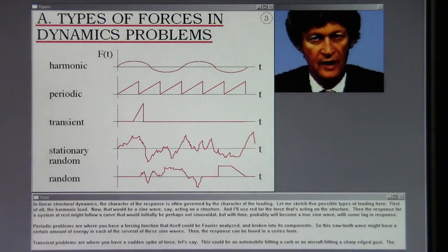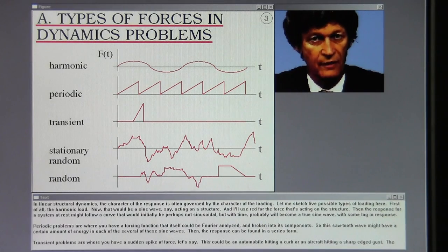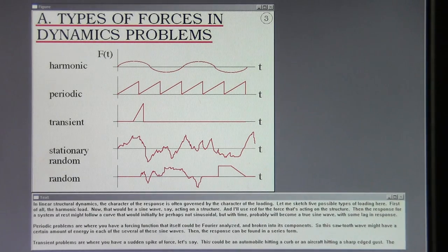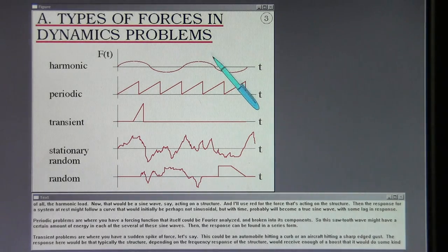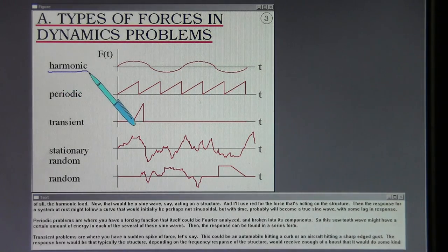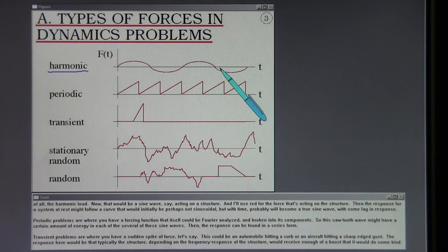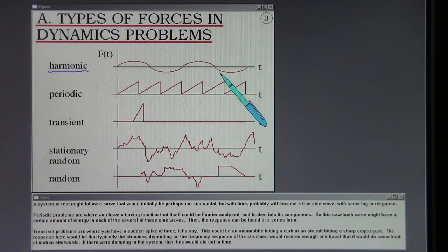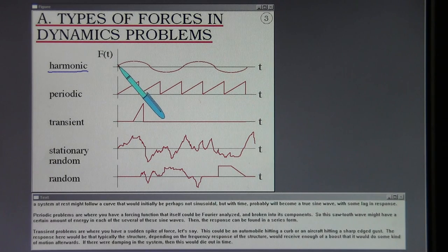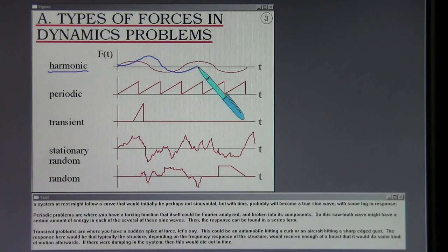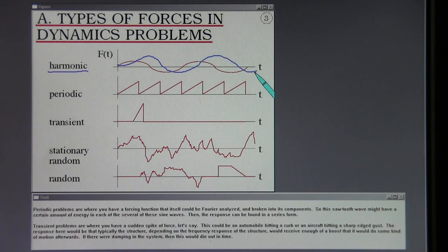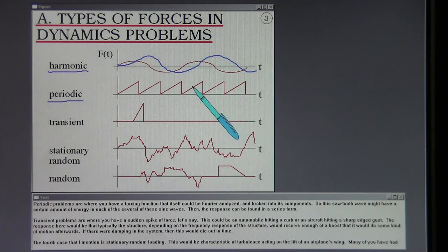In linear structural dynamics, the character of the response is often governed by the character of the loading. Let me sketch five possible types of loading here. First, the harmonic load - that would be a sine wave acting on a structure. Then the response for the system at rest might follow a curve that would initially be perhaps not sinusoidal, but with time probably will become a true sine wave with some lag in response. Periodic problems are where you have a forcing function that itself could be Fourier analyzed and broken into its components. So this sawtooth wave might have a certain amount of energy in each of several of these sine waves. Then the response can be found in a series form.